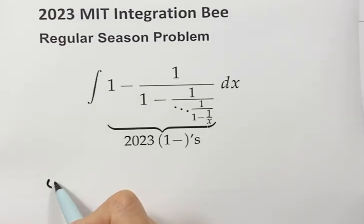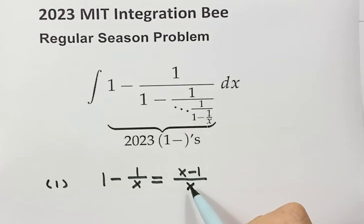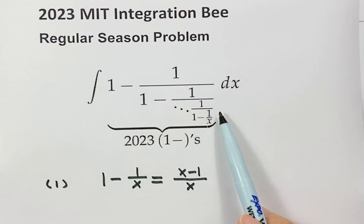So now let's see step one. Just 1 minus 1 over x. And here, just x minus 1 over x. Okay, so then move one step up, step two.